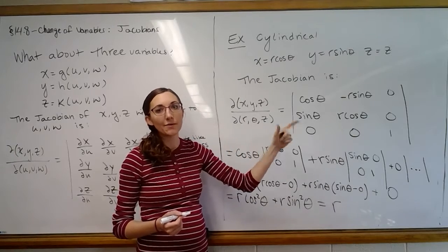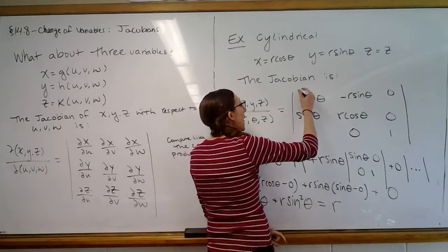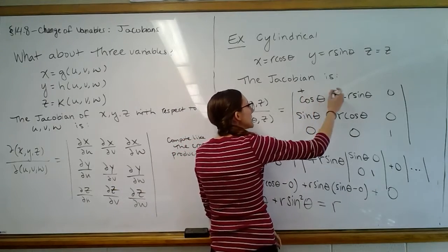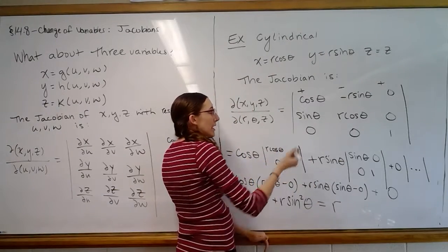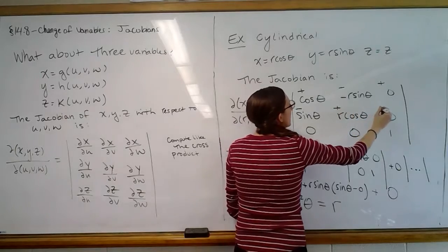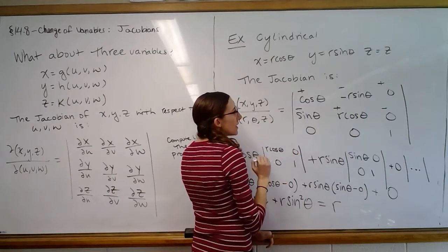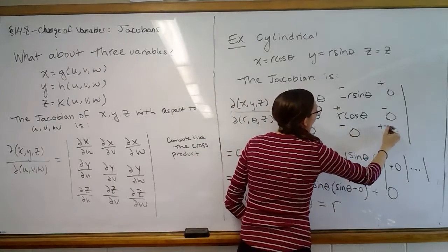right? We add the first one, subtract the second one, and add the last one. That always happens in the same pattern. So it's a plus, minus, plus. And then those keep alternating. So then if you did the second row, you would subtract the first one, add the second one, subtract the third one. The third row, you would add, subtract, add again.